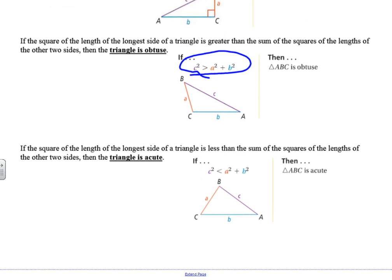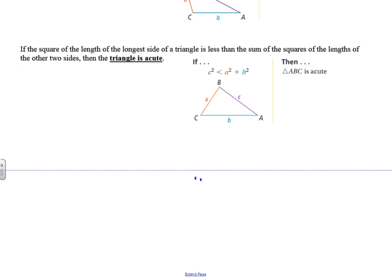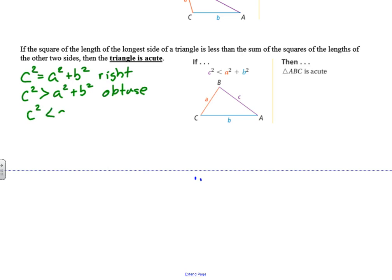And in the event that the longest side squared is less than the other two sides, you have an acute triangle. To summarize: if c squared equals a squared plus b squared, that's a right triangle. When c squared is greater than a squared plus b squared, you have an obtuse triangle. And when c squared is less than a squared plus b squared, you have an acute triangle. Remember, c always represents the longest side in those relationships.